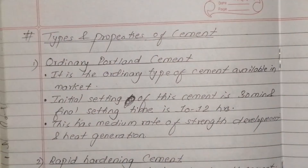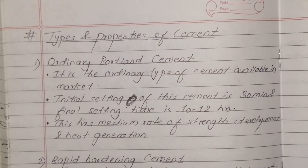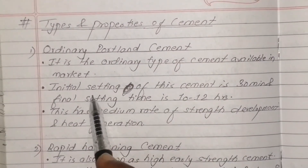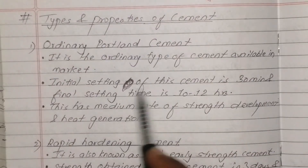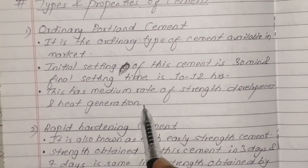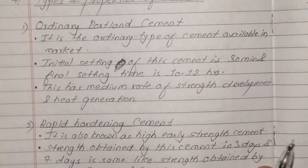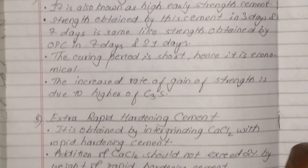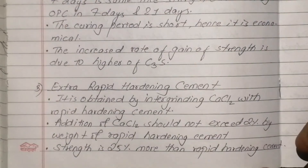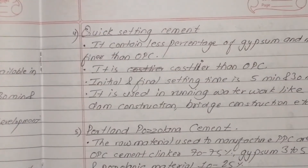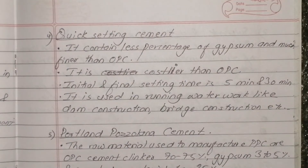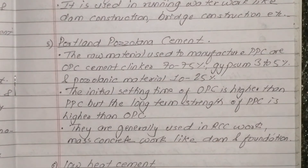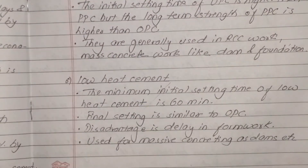Types and properties of cement: Ordinary Portland Cement is the ordinary type of cement available in the market. The initial setting time of cement is 30 minutes and the final setting time is longer. Other types include rapid hardening cement, extra rapid hardening cement, and fast and quick setting cement.